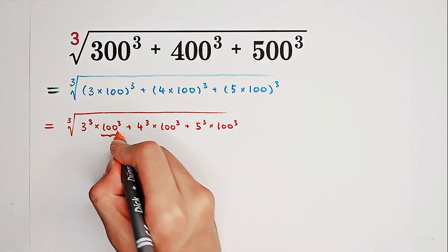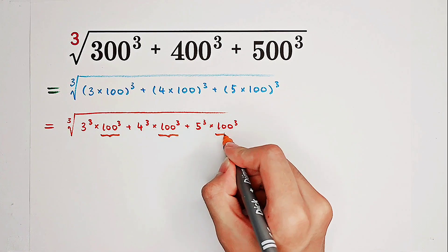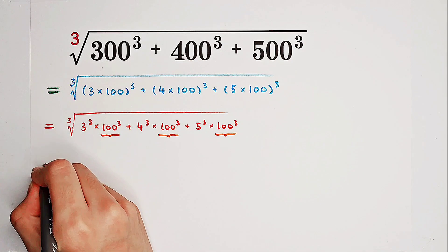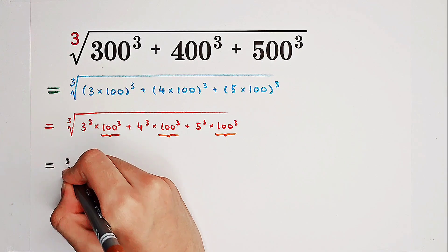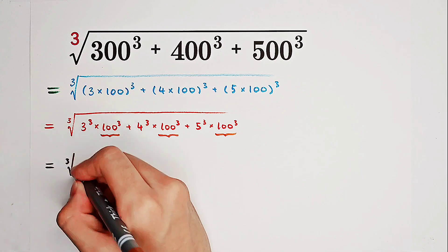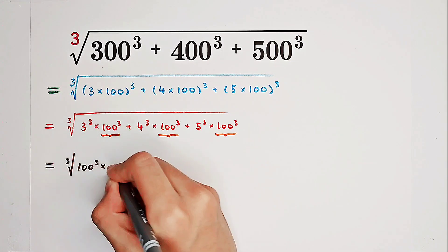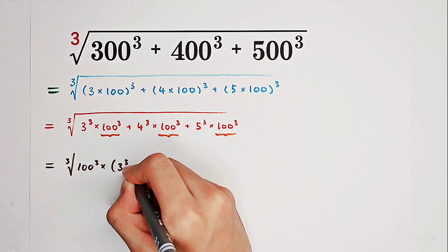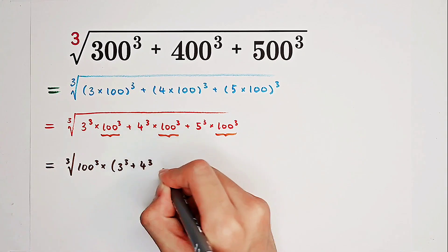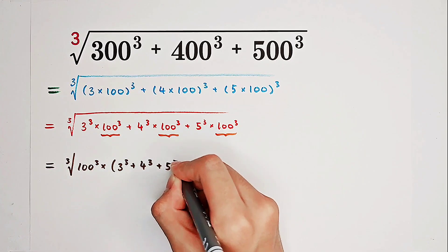Now you can take out 100 cubed. It's going to be the cube root of 100 cubed times 3 cubed plus 4 cubed plus 5 cubed.